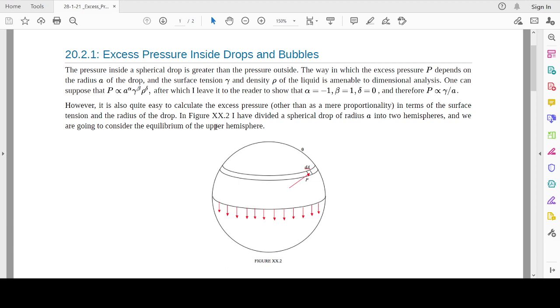You can see here in the figure there is a spherical drop. The pressure inside a spherical drop is greater than the pressure outside. So there is a difference in pressure between the inside of a drop and outside of a liquid drop. The reason for this is basically the surface tension.